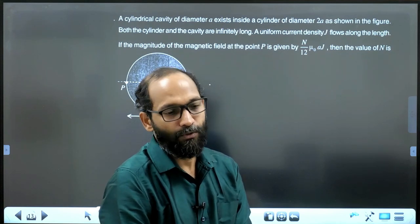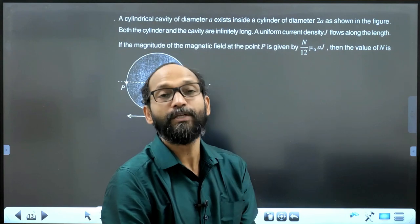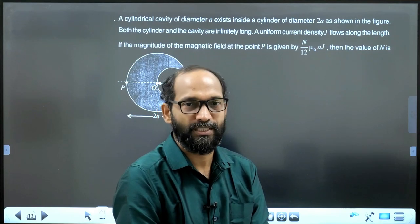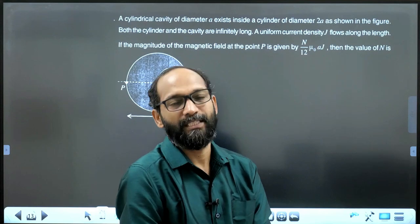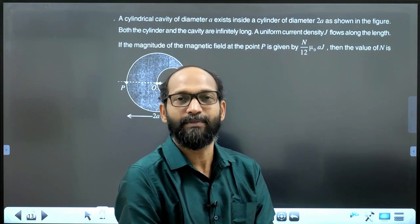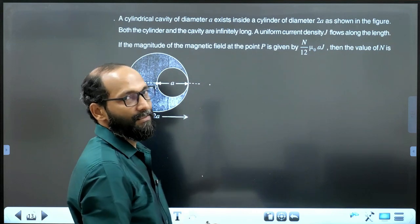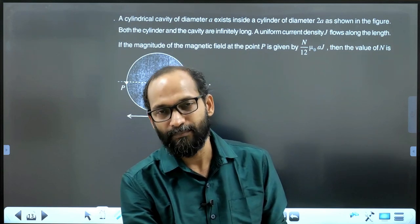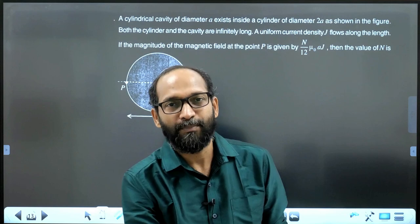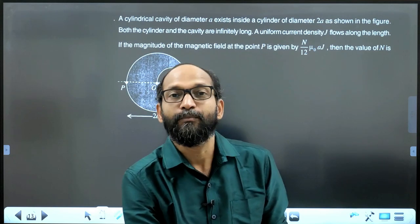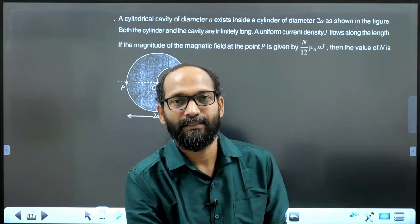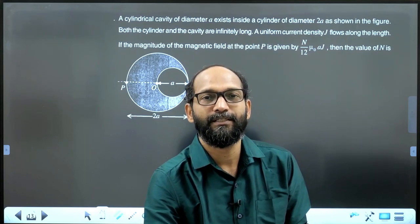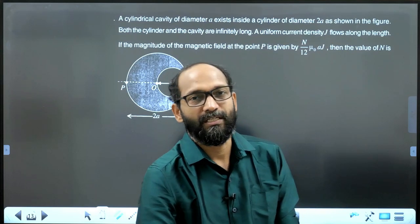In this case, we have to find the field at P after the removal of the cylindrical cavity, for which we have to apply principle of superposition also. At point P, before removing that cavity, what is the field at P? And that you have to subtract the field when the cavity was removed. So, total field at P due to unremoved cylinder minus total field at P due to the removed cylinder.